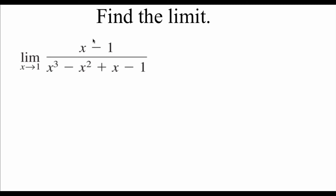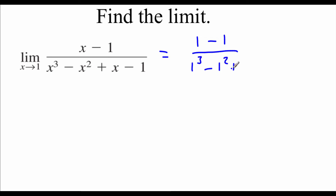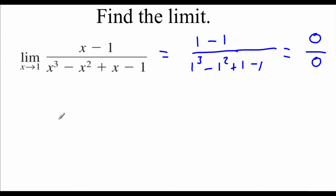For the next example, we've got this limit as x approaches 1. First I want to check that direct substitution isn't going to work, so I'll plug in 1 for all the x values. On top, 1 minus 1 is 0, and on the bottom all those 1s cancel out to give 0. So yes, we do have indeterminate form, and we're going to go through and do our dividing out.